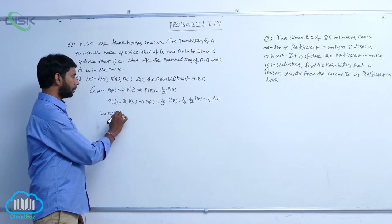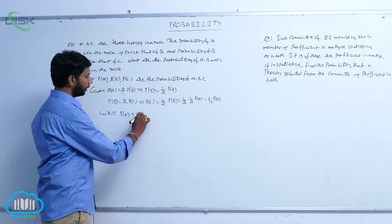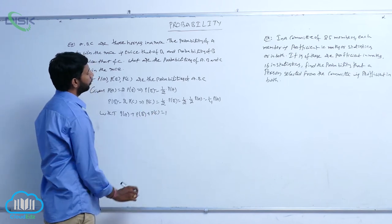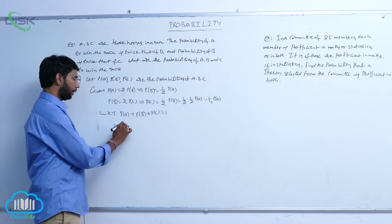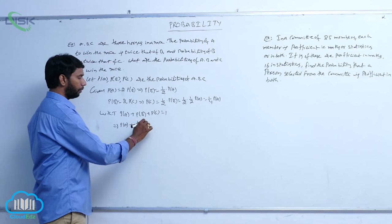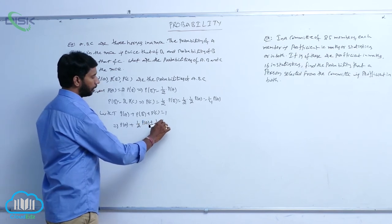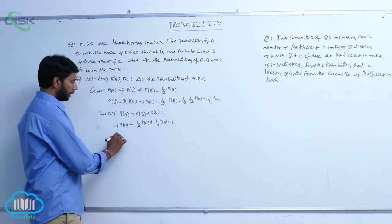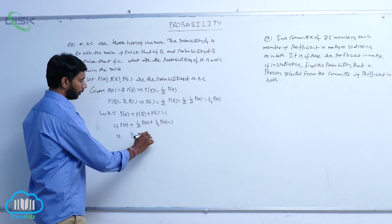We know that the sum of probabilities is equal to 1, that is P(A) plus P(B) plus P(C) is equal to 1. Substituting, P(A) plus half of P(A) plus one-fourth of P(A) equals 1. Taking LCM, it is 7 by 4 of P(A) is equal to 1.